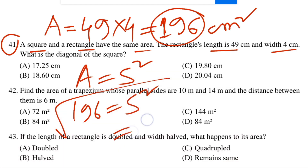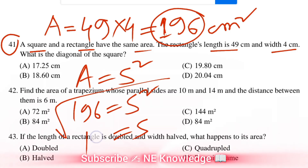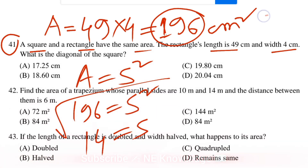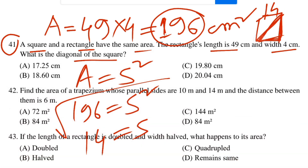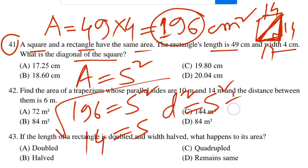I have 196, and the side of the square is 14 cm. Find the diagonal of the square. Using the formula: d squared equals s squared plus s squared, which is 2 times s squared.